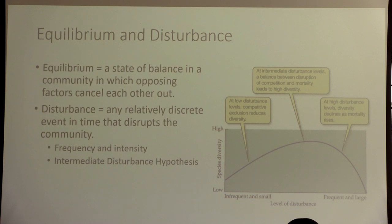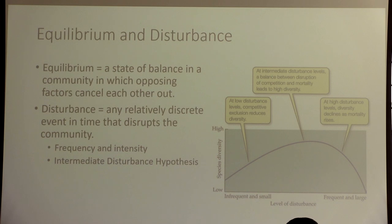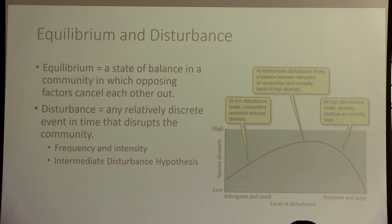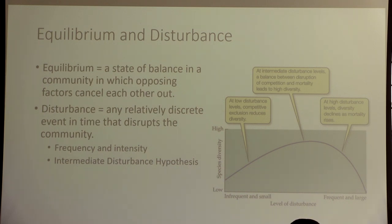Flux is usually caused by predator-prey relationships. Say we have a really good year for plant growth — lots of rain, lots of nutrients. Rabbits are going to have a huge population boom, outnumbering the coyotes that eat them. The coyotes will have a good year for eating and start reproducing more to meet that demand. As the coyote population goes up, the rabbit population goes down, and it keeps cycling around that equilibrium state.